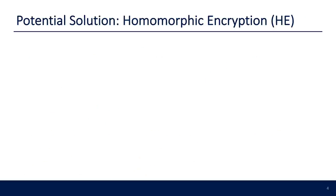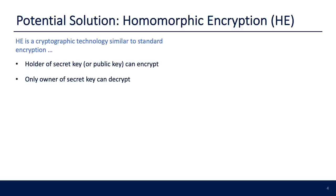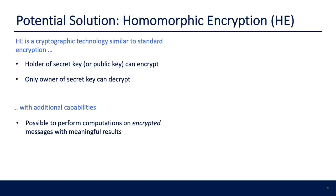A promising solution for this is homomorphic encryption. HE is a cryptographic technology similar to standard encryption in that there is a secret key and optionally a public key — the holder of either key can encrypt a message, but only the owner of the secret key can decrypt an encrypted message. HE also offers the additional property that enables computation on encrypted messages to produce meaningful results in the decrypted domain.